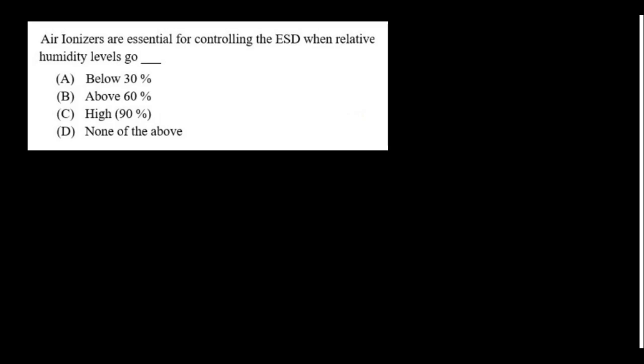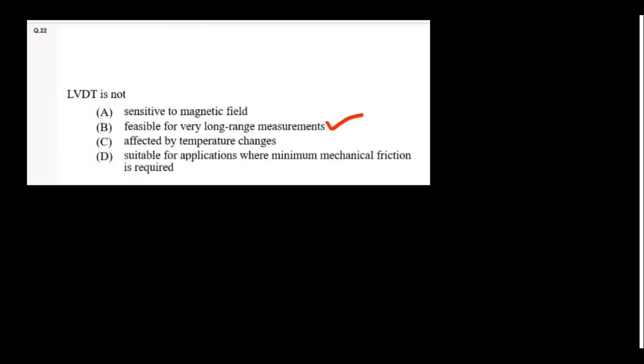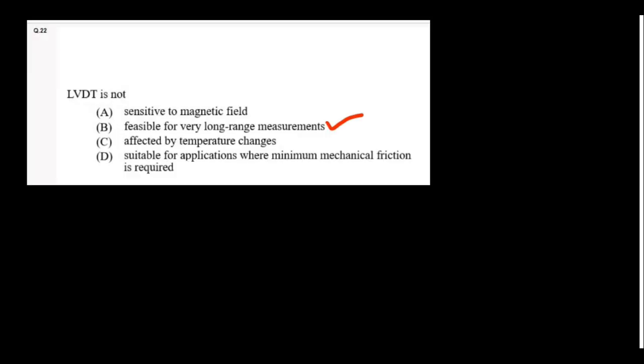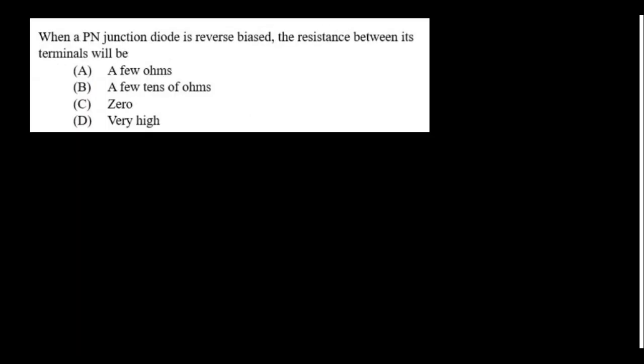Air ionizers are essential for controlling ESD when relative humidity is below 30%. When PN junction diode is reverse biased, the resistance between the terminals will be very high.